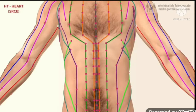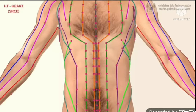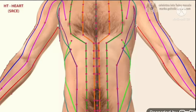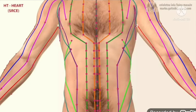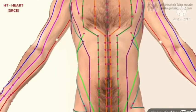It is also a yin organ and has a total of nine points. See how the meridian flows - it starts from the chest and goes up to our little fingertip.